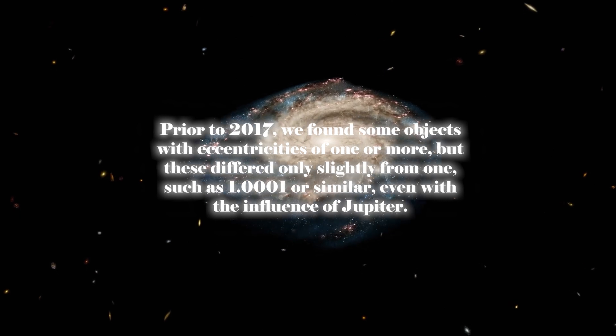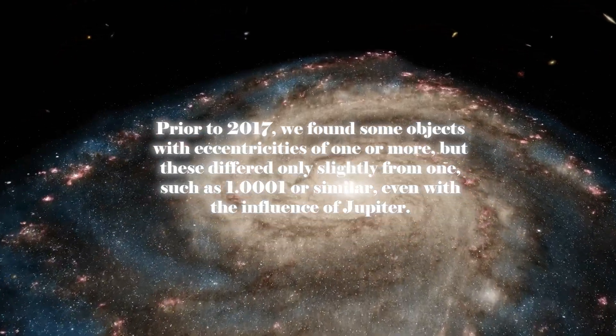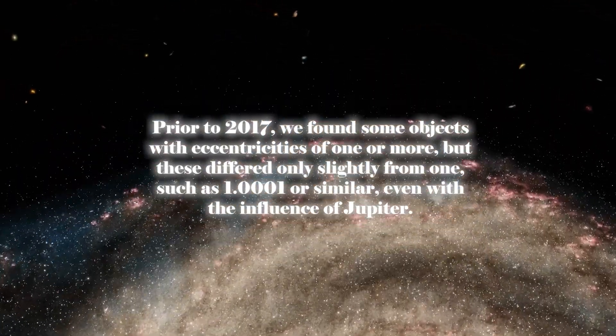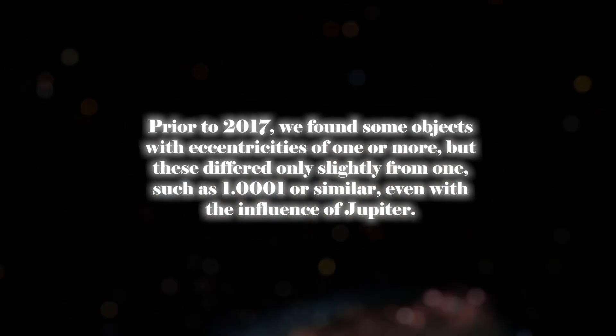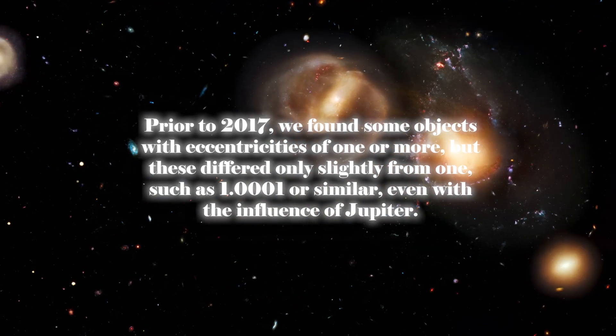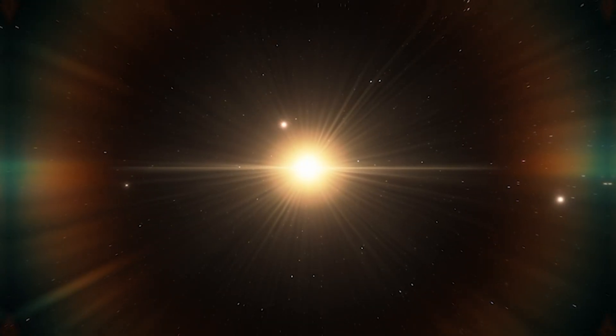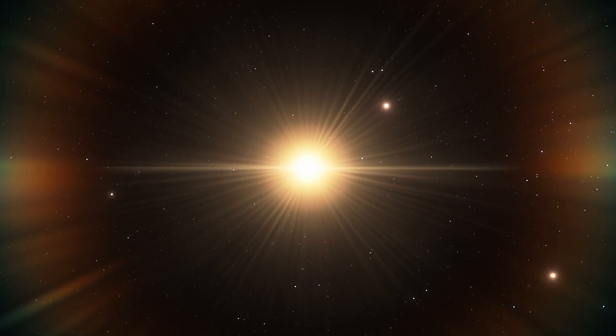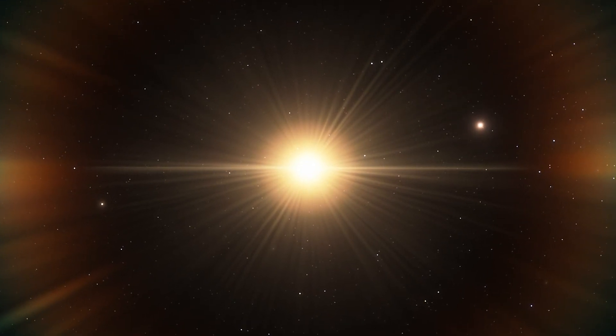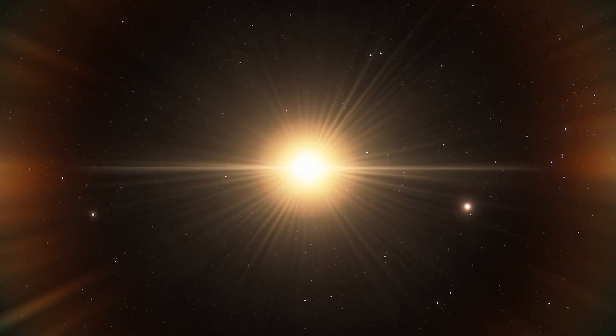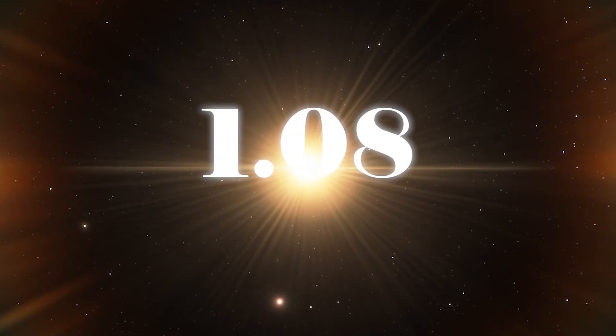Prior to 2017, we found some objects with eccentricities of one or more. But these differed only slightly from one, such as 1.0001 or similar, even with the influence of Jupiter. The fastest-moving object within the solar system, which escapes the sun's gravity albeit by a small margin, has an eccentricity of 1.08.